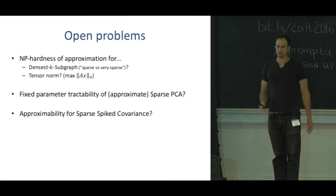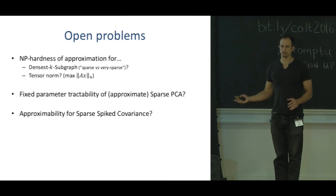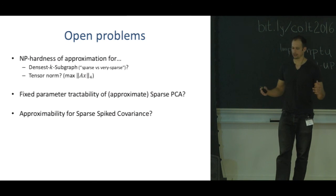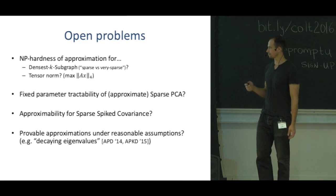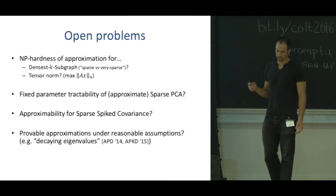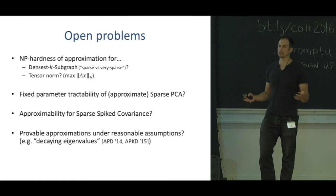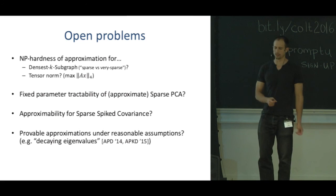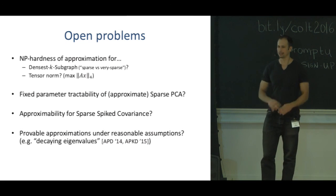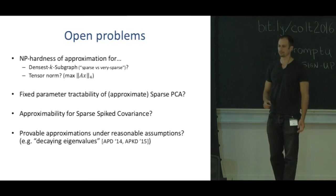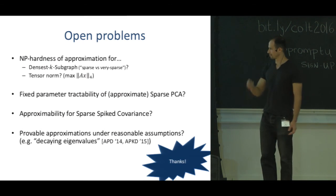I don't really understand the approximability in this well-studied sparse spike covariance model. In the case where you don't have enough samples to exactly recover the spike, how large of an explained variance can you still get? Lastly, I think it would be really nice to get algorithms that work with some assumptions on the data. As an example, there have been really nice works with decay in eigenvalues. That would be great. Thanks.